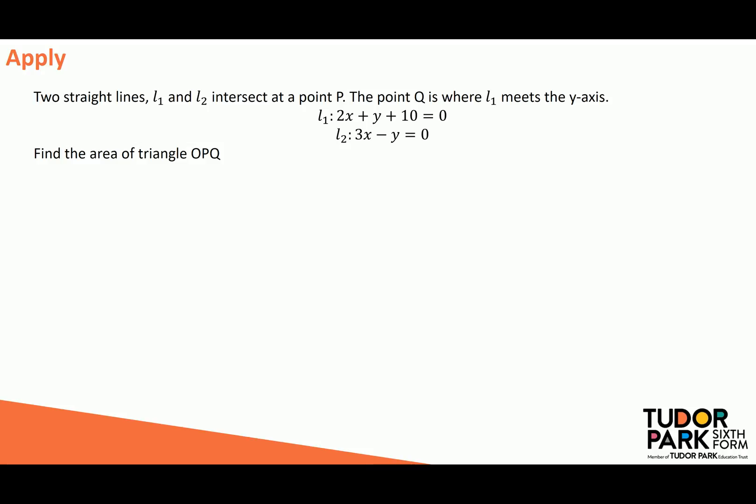In this example, we've got two lines, L1 and L2, that intersect at a point P. Now, where we're told that lines intersect, that means that we're going to have to solve a simultaneous equation, so let's start off by doing that to find the point P. Now, easily I can add L1 and L2 together, and in doing so, I'm going to get 5x plus 10 is equal to 0, so that's going to tell me that x is equal to minus 10 over 5, so x is equal to minus 2.